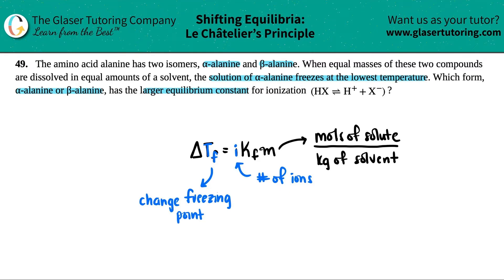For alpha alanine and beta alanine, they said equal masses and equal amounts of solvent. If I had equal amounts of solute and equal amounts of solvent, the M has nothing to do with the freezing point difference. Since they're both alanines, the Kf would basically be the same.